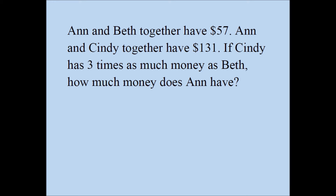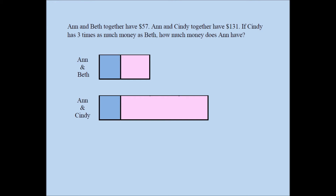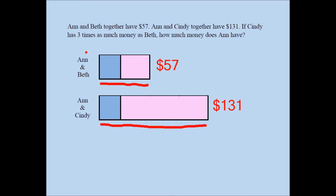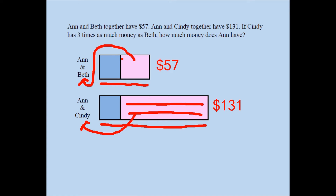So let's go ahead and draw our pictures. The first bar represents $57. The second bar represents $131. The blue amount represents Ann's amount in both bars — they're the same. The pink chunk in the second bar represents Cindy's amount, and the pink chunk in the first bar represents Beth's amount.